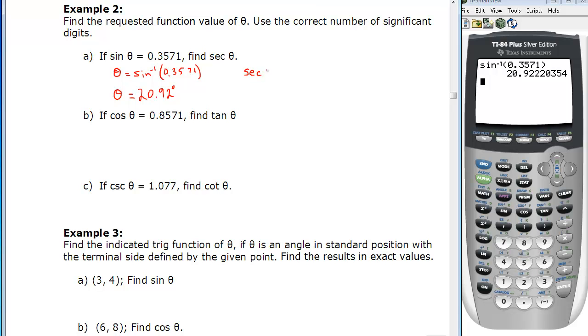Now we need to find the secant of theta. And we just found theta is 20.92 degrees. So secant of 20.92. Well, we know secant is 1 over cosine. So this is 1 over the cosine of 20.92. And we can do that all in one step on the calculator. 1 divided by the cosine of 20.92. Enter. And we find our answer then is 1.071. Again, rounded to four significant digits. And so that's what that question was looking for.